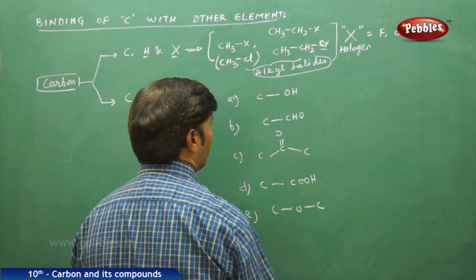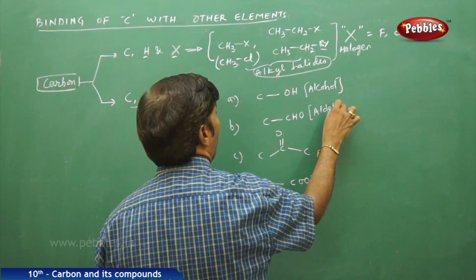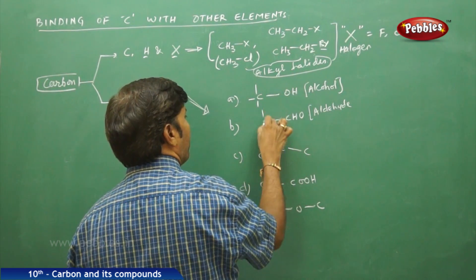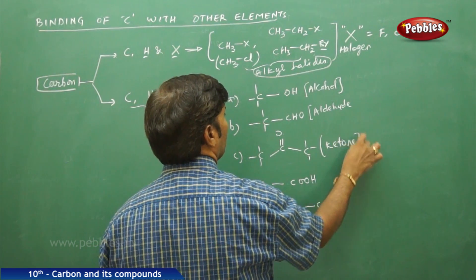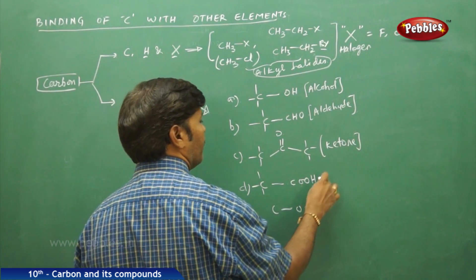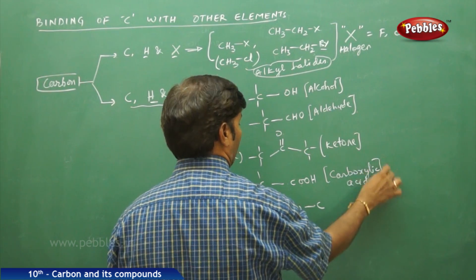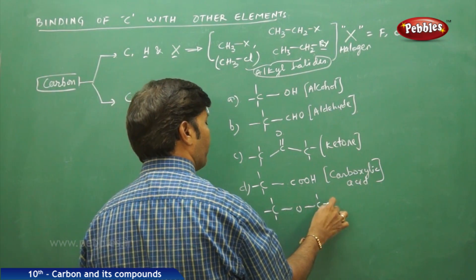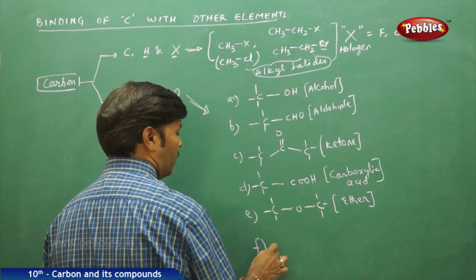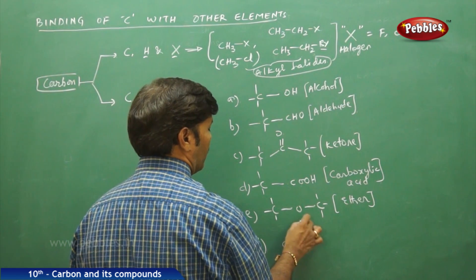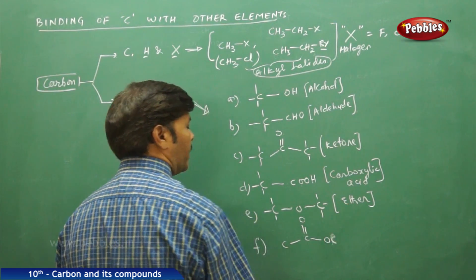So to summarize: this is alcohol, this is aldehyde, this is ketone, this is carboxylic acid, and this is ether. Next you can also have an ester functional group.